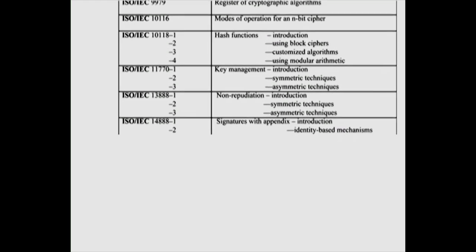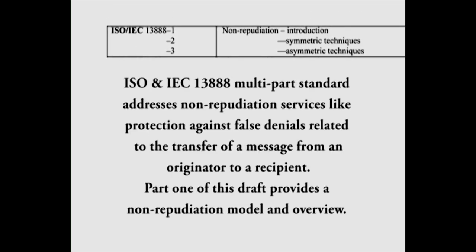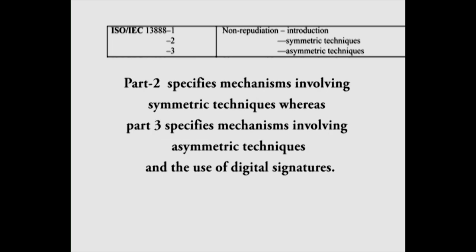ISO and IEC 13888 is a multi-part standard that addresses non-repudiation services, like protection against false denial related to the transfer of a message from an originator to a recipient. Part 1 provides a non-repudiation model and overview. Part 2 specifies mechanisms involving symmetric techniques, whereas part 3 specifies mechanisms involving asymmetric techniques and the use of digital signatures.